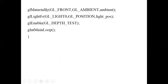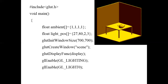Coming to the lab program explanation: first we include the header file glut.h. In the main function, I am making use of an array named ambient, which takes four parameters — the first three for RGB values and the next one for alpha. We also have an array called light_pos, used to set the position of the light. We use the function glLightFV, passing values 27, 80, 2, 3 to define the light position. Then we have glutInitWindowSize to set the window size and CreateWindow with the name 'scene'. The glutDisplayFunc registers the display callback function.